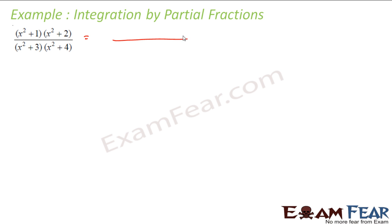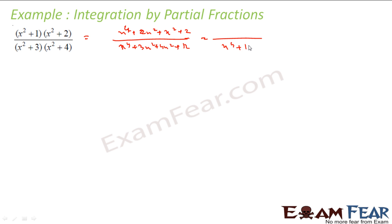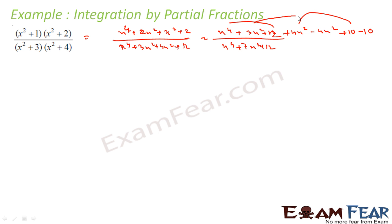Let us take this tricky question. Here the power is 4 in the numerator and power 4 in the denominator, so I can convert this into simpler form by dividing. The numerator x⁴ + 7x² + 12 can be split: to get 7x², I add 4x² and subtract 4x²; to get 12, I add 10 and subtract 10.